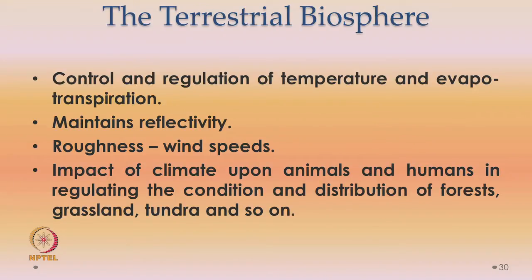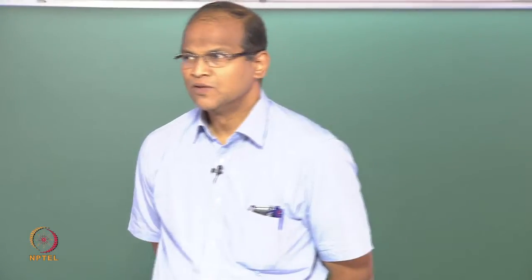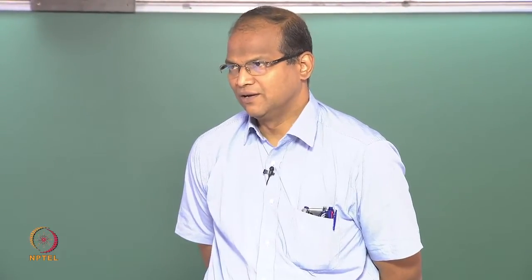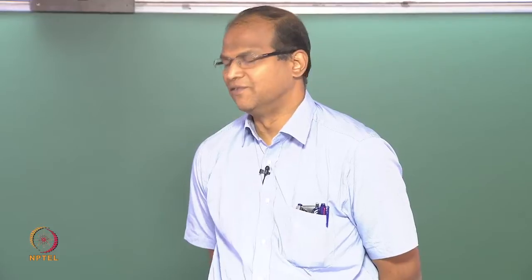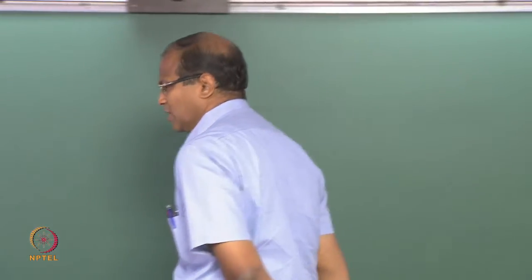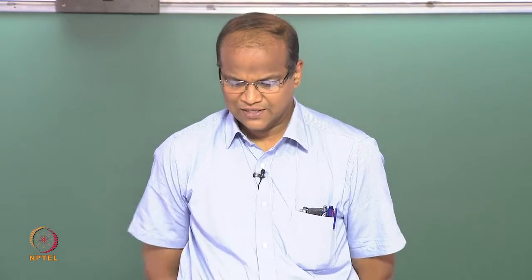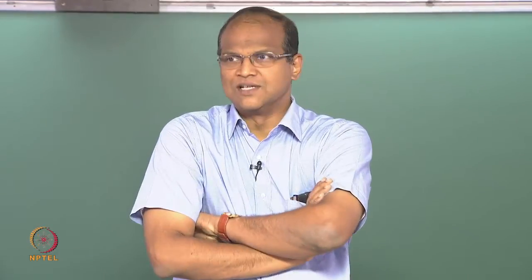The terrestrial biosphere was the last component we saw in the previous class. The most important thing is that it controls and regulates temperature. Vegetation always controls both temperature and precipitation. For example, in Kerala you get more rain because the monsoon hits there first. Also, if it is more green — for example at IIT — we have a temperature drop of 1 to 2 degrees centigrade when you enter the campus from outside, because of the thick vegetation. There is also an important process called evapotranspiration, which takes place in plants.